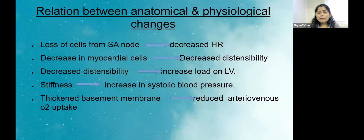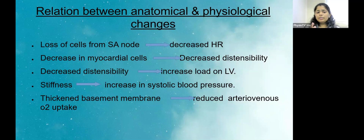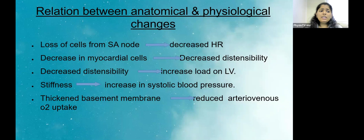Looking at the relation between anatomical and physiological changes: loss of cells from the SA node results in reduced heart rate because the firing is reduced. Decreased myocardial cells reduce the distensibility of the heart, which increases the load on the left ventricle. Because blood is not being pumped out efficiently, blood accumulates, and eventually the increased workload results in hypertrophy of the left ventricle.